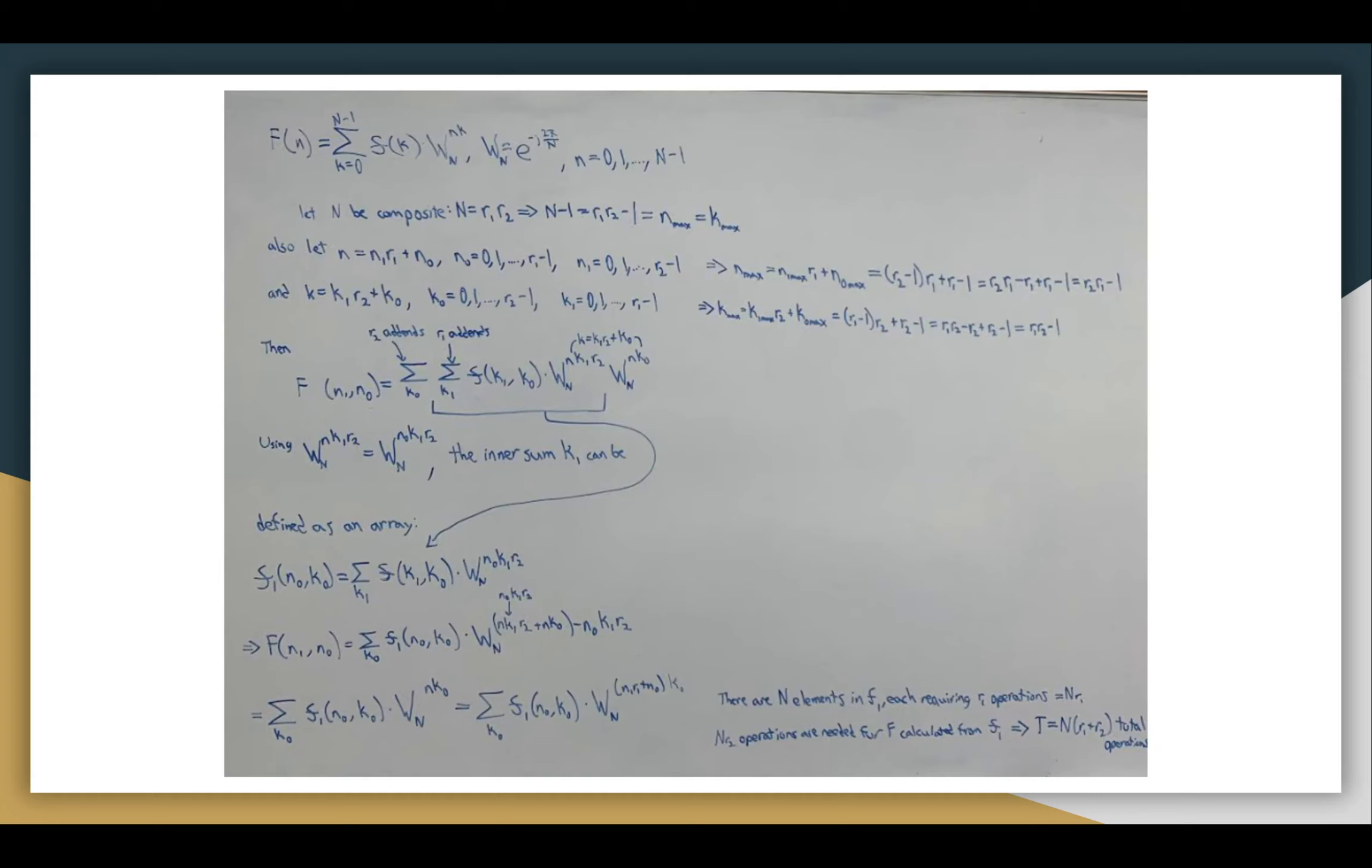While variations have been made since the 1965 publication, n is a composite number, and then we make our lowercase n value equal n1 R1 plus n0, with this range of n0 and this range of n1. And we do something similar with our K value.